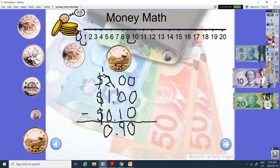So today, we have 90 cents if we subtract these three coins from each other. We would have 90 cents left.